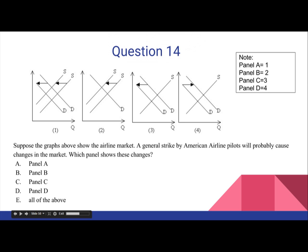Question 14. Suppose the graphs above show the airline market. A general strike by the airline company pilots will probably cause changes in the market. Which panel shows these changes? A panel A, B panel B, C panel C, D panel D, or E all of the above.